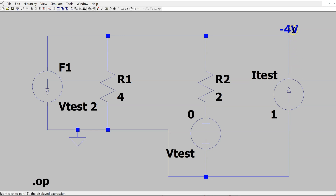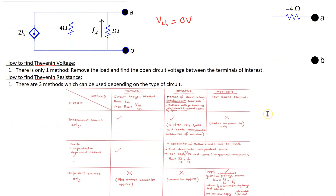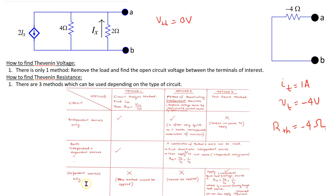Therefore VT is minus 4 volts and IT is 1A. Thus R Thevenin is minus 4 ohms as expected. This shows how the test source method can be used in LTSPICE to find R Thevenin for circuits containing dependent sources only.